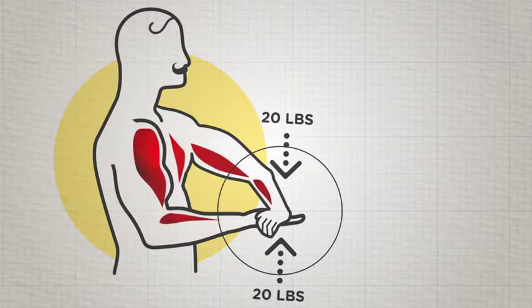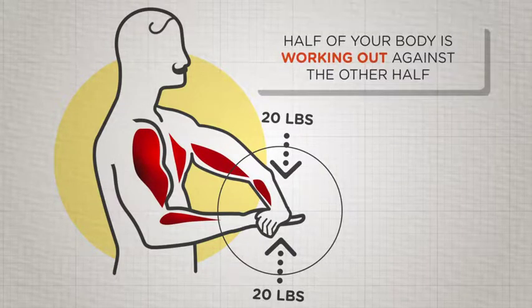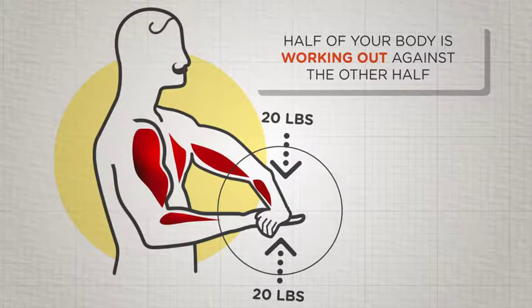This is one of the reasons why short, isometric workouts are so effective. Half of your body is working out against the other half, doubling your effort.